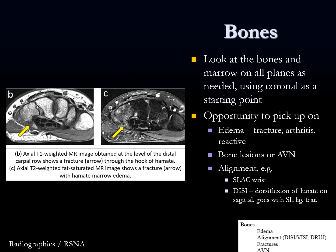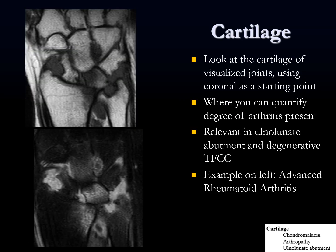Getting towards the end: bones — look at the bones and marrow in all planes, using coronals as starting points. Go through all the bones starting with the radius and ulna, work your way through the carpal bones, and into the metacarpals. Look for edema, fracture, arthritis, reactive edema. If you do find edema, try to find a reason — is there a fracture? Is this related to arthritis at the first CMC joint? Avascular necrosis could also be picked up at this point. This is also where I like to look for alignment issues — SLAC wrist comes from disruption of the scapholunate ligament, proximal migration of the capitate, and arthritis at specific points. DISI refers to dorsiflexion of the lunate on the sagittal and goes with scapholunate ligament tear.